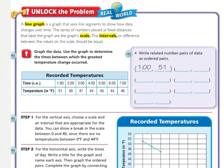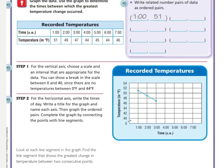A line graph is a graph that uses line segments to show how data changes over time. Data is information. The series of numbers placed at fixed distances that label the graph are the graph's scale. The intervals, or the difference between the values on the scale, should be equal. On this line graph, the scale goes from 40 to 54, but you always start at 0. The broken line means that section doesn't match the same skip-counting as the rest. The interval here is by 2.